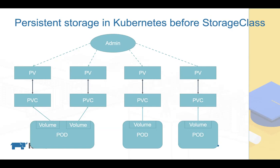This static model has a few issues. First, since the PVC only specifies things like storage size, the PV can be over-provisioned. For example, if I ask for one gigabyte but the smallest available PV is 100 gigabytes, Kubernetes will still bind that 100GB PV to the PVC — resulting in wasted space.